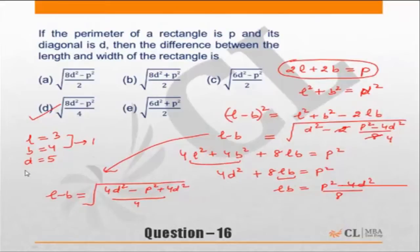The perimeter in this case will become 3 plus 4 is 7 into 2, 14. So P is 14, D is 5. The answer must be 1.